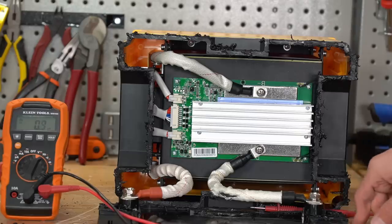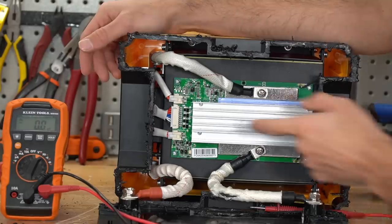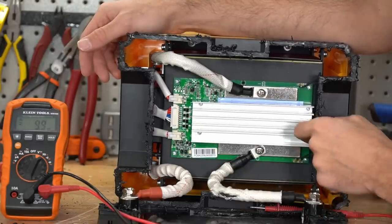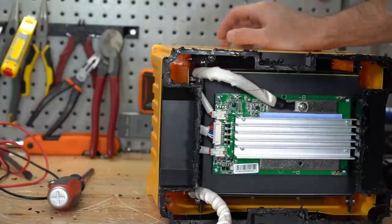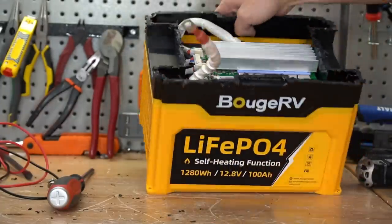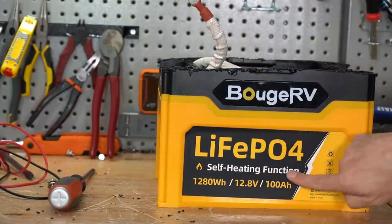We haven't seen a disconnected balance cable on a brand new battery since like the Rooksuit days. That's very unfortunate. I think they should glue this down so that it doesn't pull out during shipping. Oh, this has heaters. This is internally heated. Yep, self-heating function.